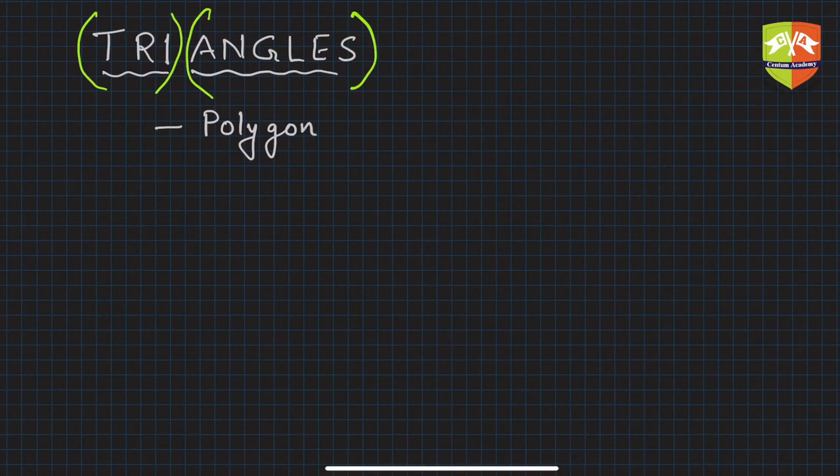Polygon - what is a polygon? Poly means many, gon means side. So hexagon, heptagon, decagon, triangle, square, quadrilateral - all these are polygons, right? A closed figure.